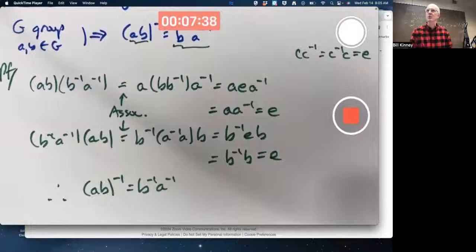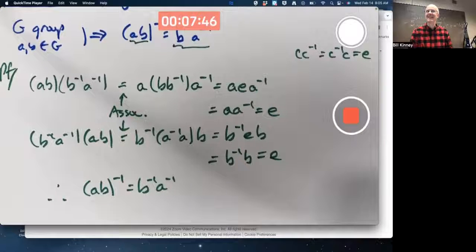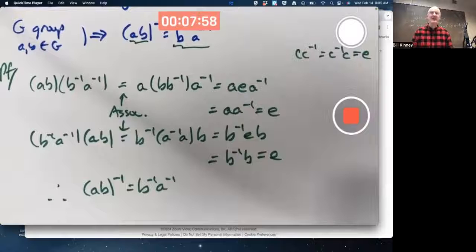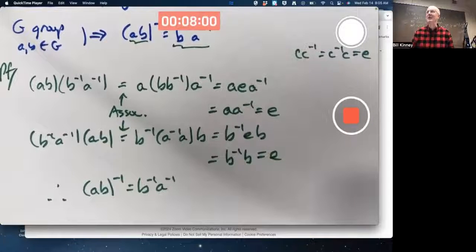Starts with the letter U. U-N. I always do this in classes. U-N-I. U-N-I-Q. Unique. Uniqueness. Uniqueness of inverses. That's a theorem.